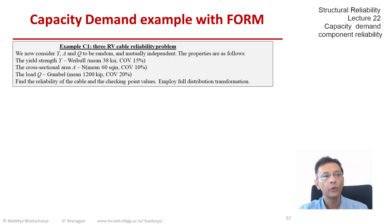We have three mutually independent random variables: Y, the yield strength; A, the cross-sectional area; and Q, the load. They are respectively Y is Weibull, A is normal, and Q is Gumbel.